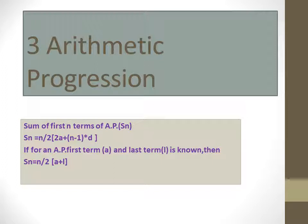Sum of first N terms is denoted by the symbol S_N. The formula is: S_N equals N upon 2 into bracket 2A plus N minus 1 multiplied by D. Here, S_N means sum of first N terms, N means number of terms, A is the first term, and D is the common difference — same meaning as in the T_N formula.